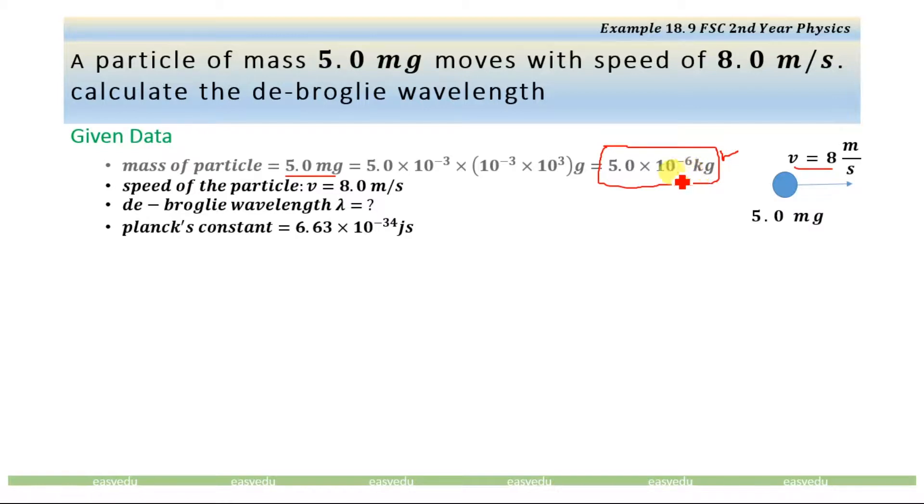So we have just converted this mg to kg. The speed of the particle is given as 8.0 m per second. And we are going to calculate the de Broglie wavelength. The Planck's constant h is equal to 6.63 × 10⁻³⁴ Joules second.